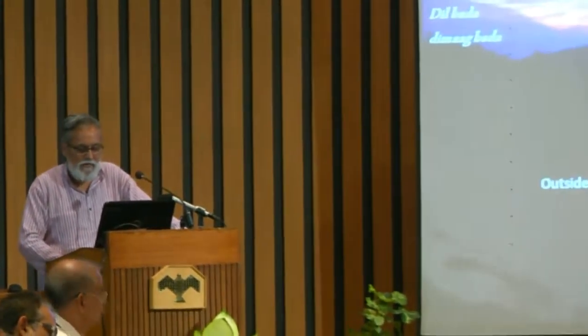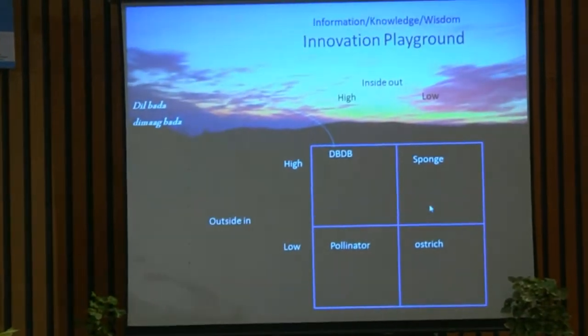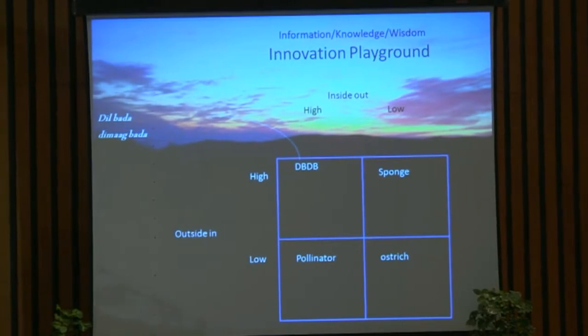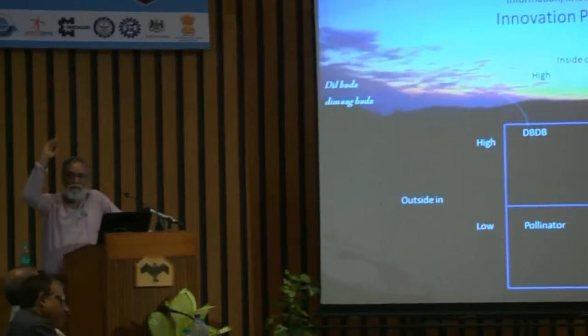How do we bring in partnership between the formal and informal sectors? There is an innovation playground with two dimensions — inside-out and outside-in, low and high on both sides. If both are low, you are behaving like an ostrich. If you want to learn from outside but don't share what you did with the knowledge — like many crowdsourcing platforms today — you are a sponge. Then there are pollinators like Tesla, which opened all its patents. But if both are high — you want to learn from outside and share with outside — that is the open innovation platform: open sharing, open learning, big heart, big mind.